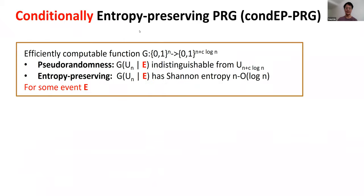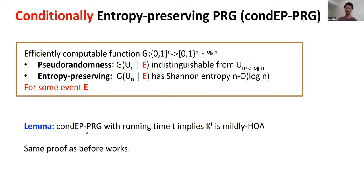A conditionally secure entropy-preserving PRG (EPPRG) is one where the pseudo-randomness and entropy-preserving properties hold only conditioned on some event E. Specifically: g(U_n) conditioned on E is indistinguishable from U_{n + c·log n}, and g(U_n) conditioned on E has Shannon entropy at least n − O(log n). We can show that the existence of a conditionally secure entropy-preserving PRG with running time t implies KT is mildly hard on average — basically the same proof as before works here. So it remains to construct a conditionally secure entropy-preserving PRG.